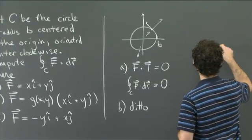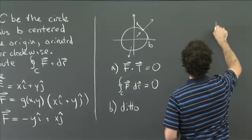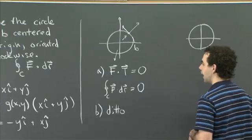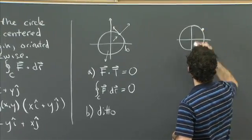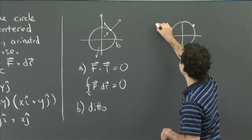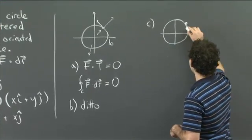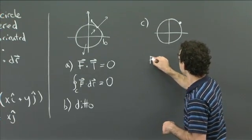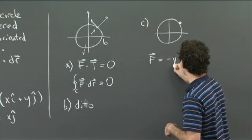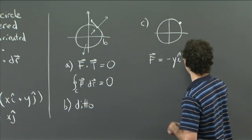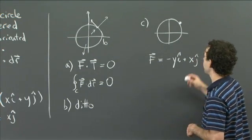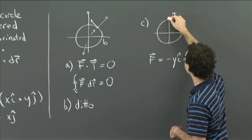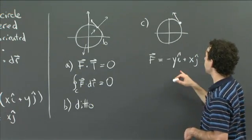All right. So let's now look at part c. I'm going to draw another little picture. So in part c, there's your curve. At the point (x,y), so I'm going to draw some choices of f again. So in part c, at the point (x,y), your vector field f is minus yi plus xj.